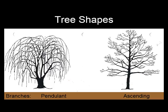Tree shapes can help determine species as well. This is an example of a pendulant tree, which is like a weeping willow shape, and then an ascending tree, like branches on a maple tree.